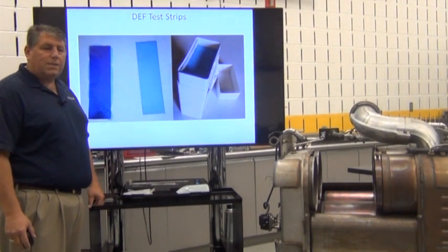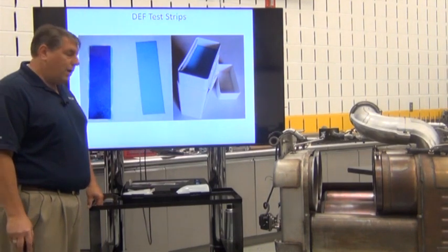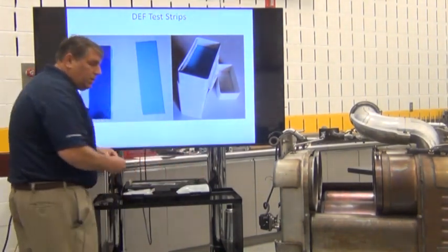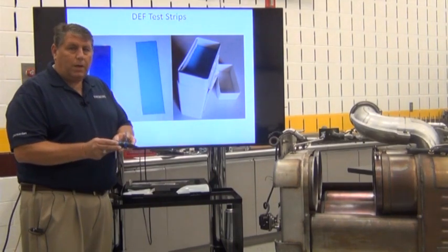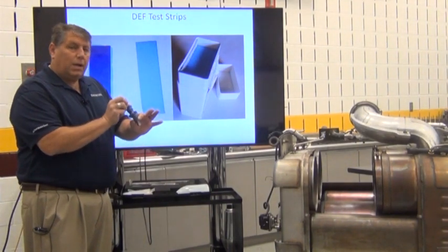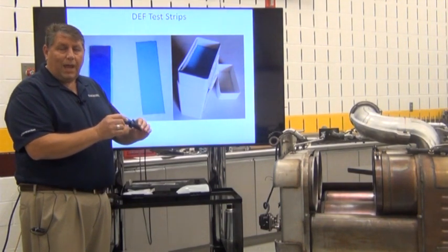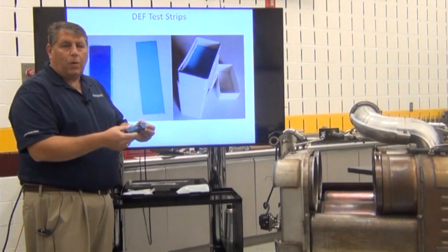The next item you're going to want to check is DEF quality. We have our refractometer out of our kit. You basically put a little bit of DEF in the window, close it up, take a look, and make sure you have 32.5% of urea. As long as you have that, then you know you do have good DEF quality.